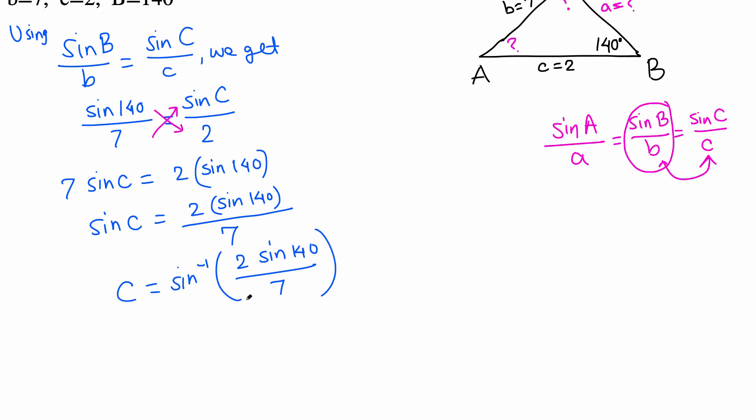Use your calculator and enter everything, or if you want to use decimal for sine 140, then write at least six digits to get better approximation. Using calculator, this C comes out to be 10.58.